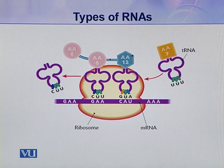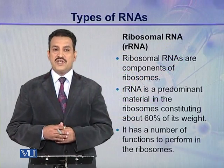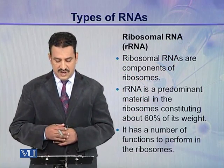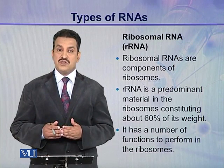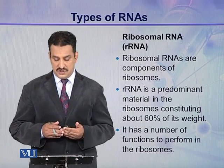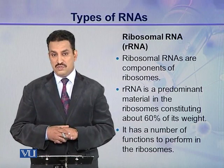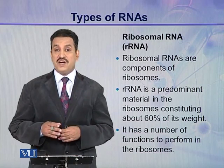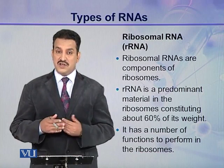In this way they help in the synthesis of proteins. The third type of ribonucleic acid is ribosomal RNA or rRNA. Ribosomal RNAs are components of the ribosomes, and ribosomes are the protein synthetic machineries. Ribosomal RNA is a predominant material in the ribosome, and it comprises about 60% of ribosomes by weight. It has a number of functions to perform in the ribosome during the process of protein synthesis.